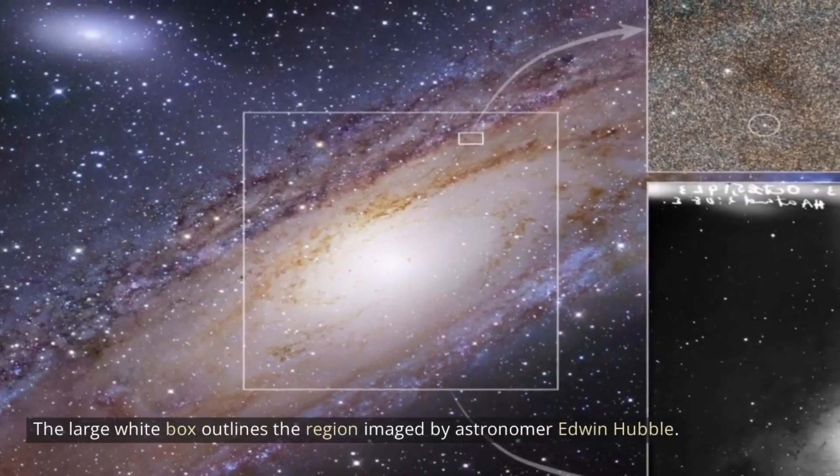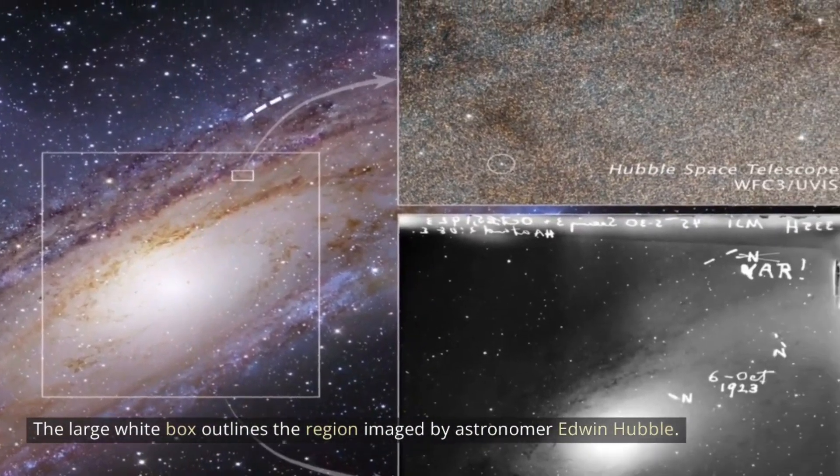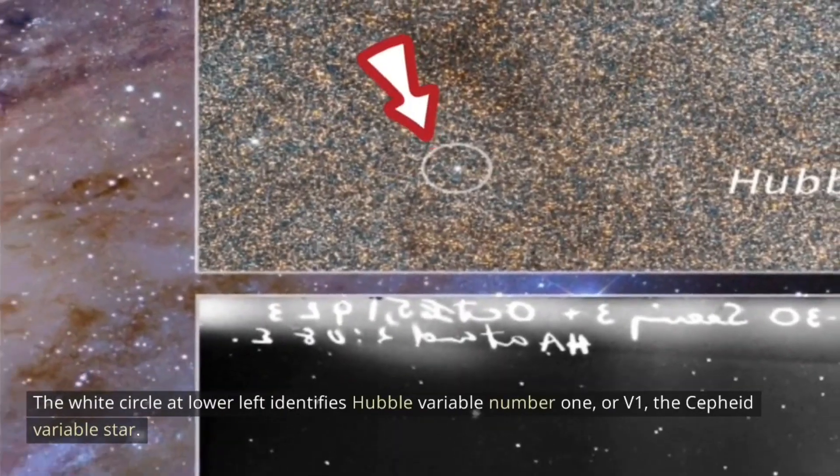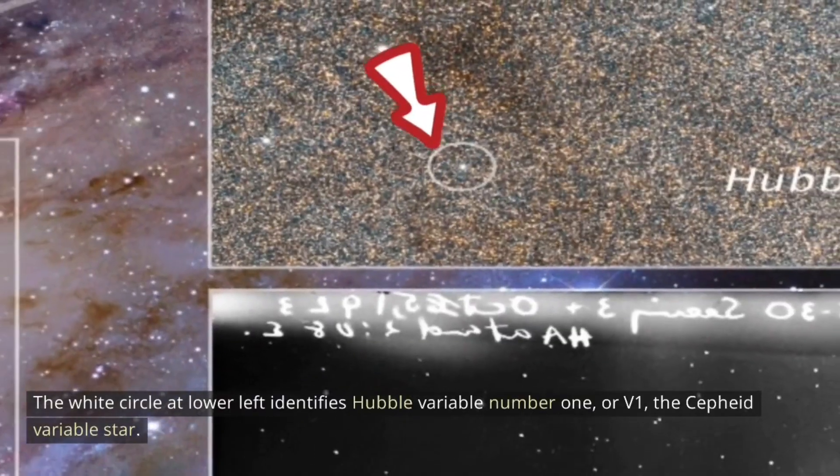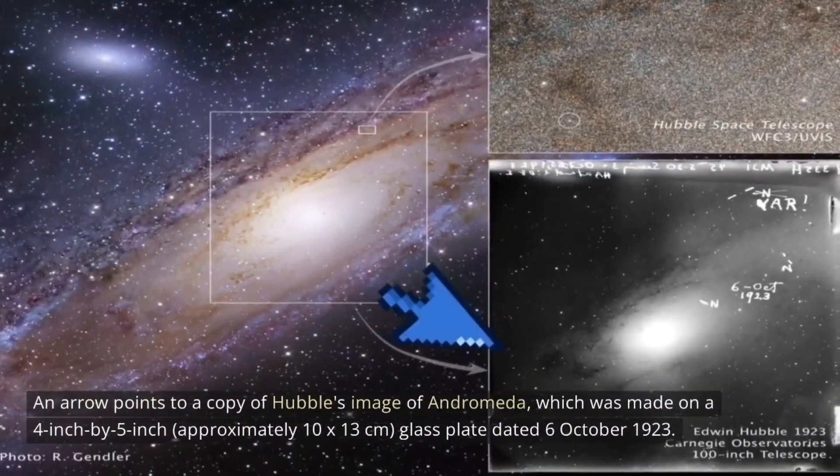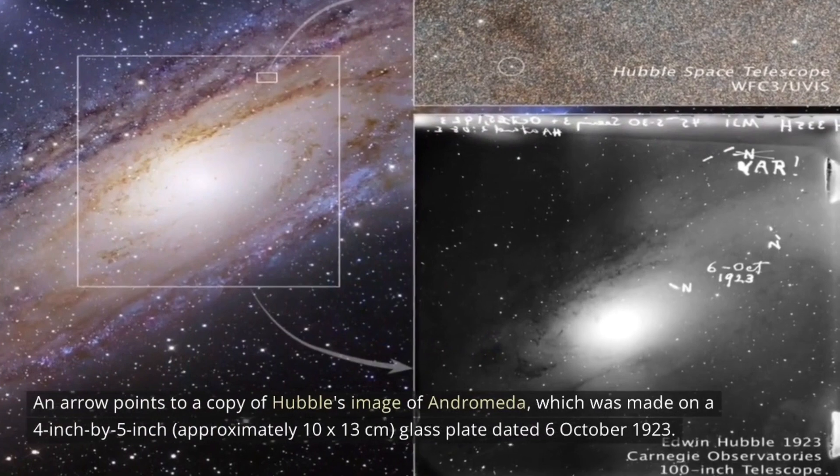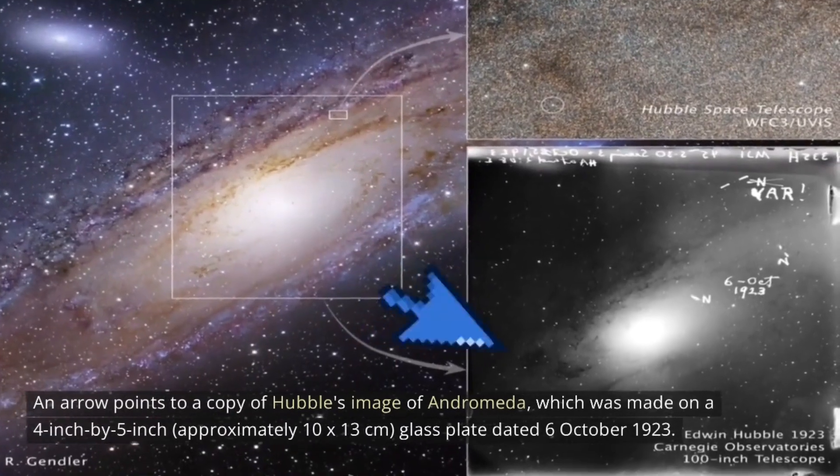The large white box outlines the region imaged by astronomer Edwin Hubble. The white circle at lower left identifies Hubble variable number 1, or V1, the Cepheid variable star. An arrow points to a copy of Hubble's image of Andromeda, which was made on a 4-inch by 5-inch, approximately 10 by 13 centimeters, glass plate dated October 6, 1923.